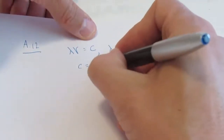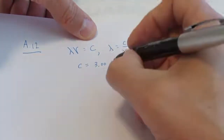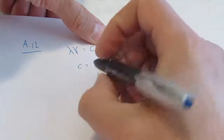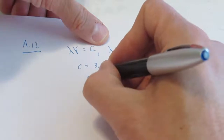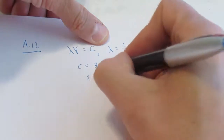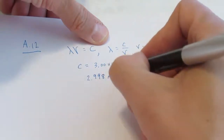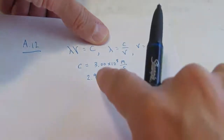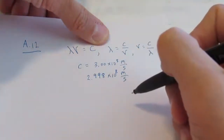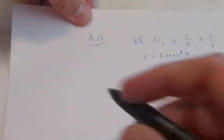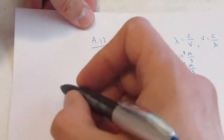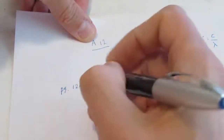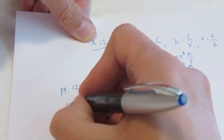To three significant figures, that's 3.00 times 10 to the eighth meters per second. All of the physicists at the school prefer 2.998 times 10 to the eighth meters per second. So if you need a fourth sig fig, there you go. Now, once again we'll start on page 124 of the blue textbook and we'll do number 10 first.